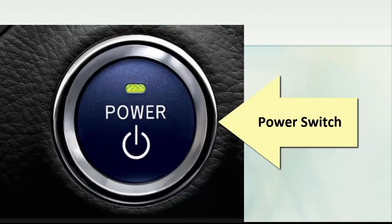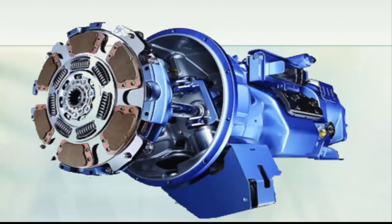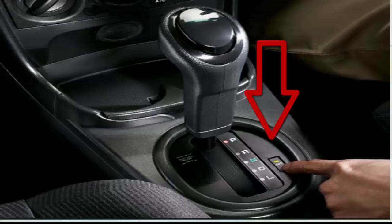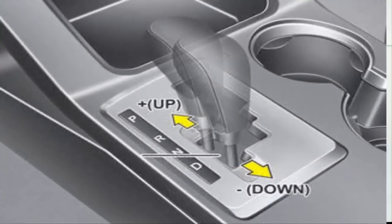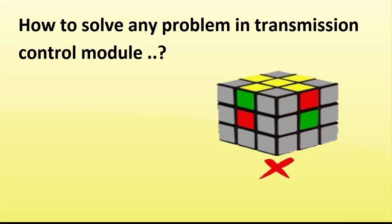Seventh, power switch. The programming of the automatic transmission is changed by the power button. In power mode, the automatic transmission will hold gears for a long time during takeoff and acceleration.